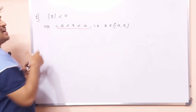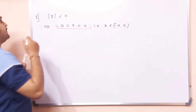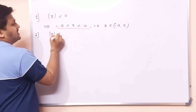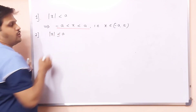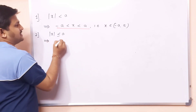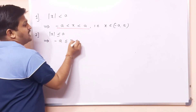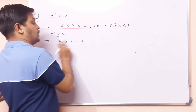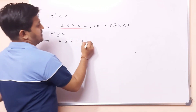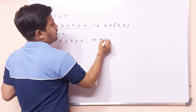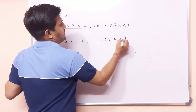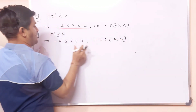Second case: if |x| ≤ a, this implies x lies between −a and +a, including both −a and +a. That is, in interval notation, x belongs to the closed interval [−a, +a].